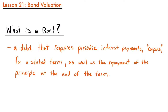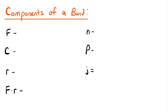Now that we have introduced the concept of a bond, how are we going to evaluate them? How would we calculate the price of a bond? We need to know the components of a bond used to calculate its price. F represents the face value of a bond — essentially the amount that the bond is issued for. So if you took out a loan of $1,000, that would be the face value. F is the face value, the amount that is being borrowed.